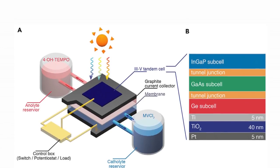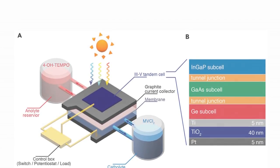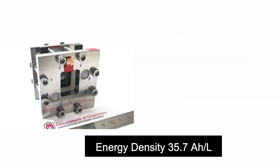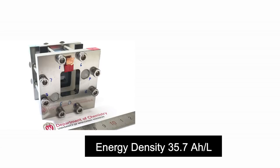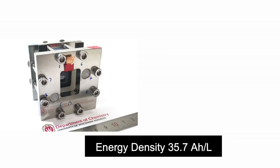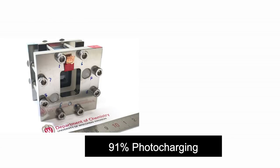Tests done so far have shown that lithium-ion solar battery has a theoretical capacity of 35.7 amp power per liter, which is close to that of conventional lithium-ion batteries, and it can be photocharged for about 91 percent of its theoretical capacity.